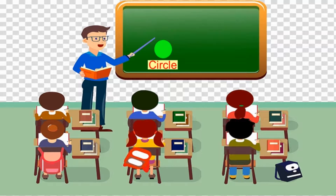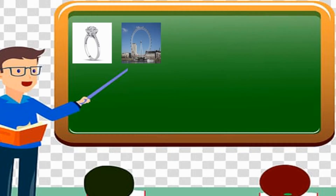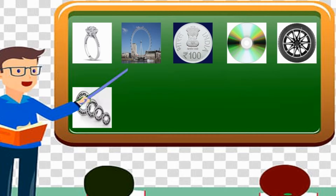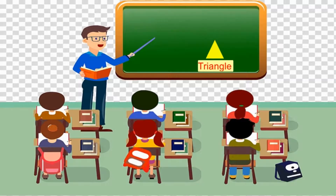Circle: C-I-R-C-L-E. A circle is all points in the same plane that lie at an equal distance from a center point. Things that are similar to a circle are: ring, joint, wheel, coin, CD, wheel bearings, bangle, watch, ball, pupil of the eye.